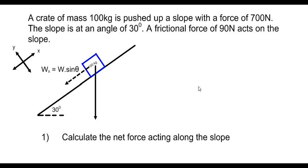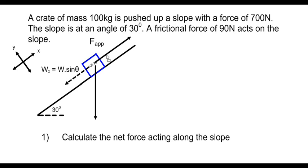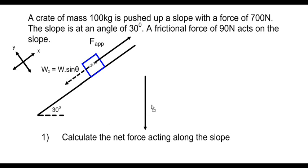Looking at our question, the object is pushed up the slope with a force of 700 newtons, so we have an applied force of 700 newtons pushing the object up the slope. The x-component of weight, wx, is pulling the object down the slope.